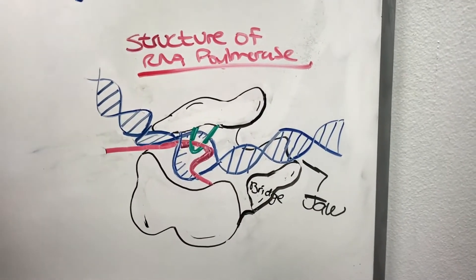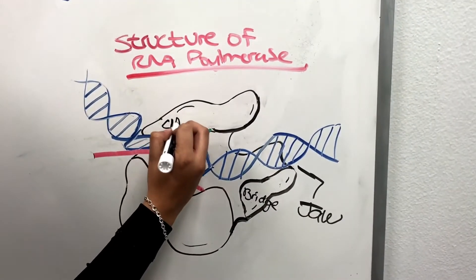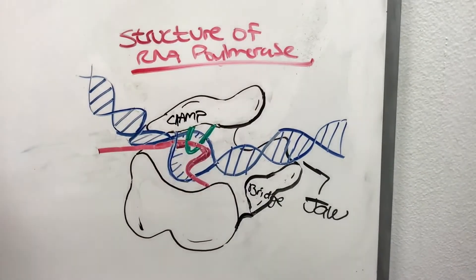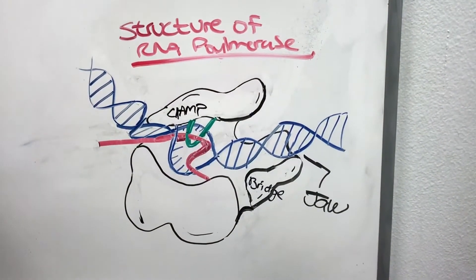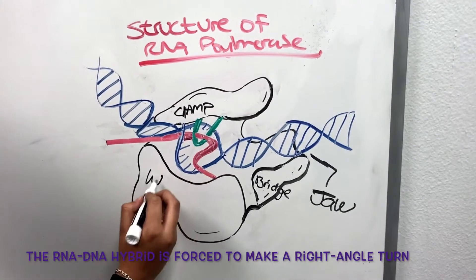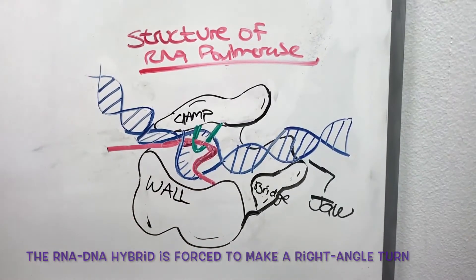At the clamp, it controls movement of the DNA through the enzyme. And at the wall, it pushes the DNA upward, assisting for the opening of DNA.